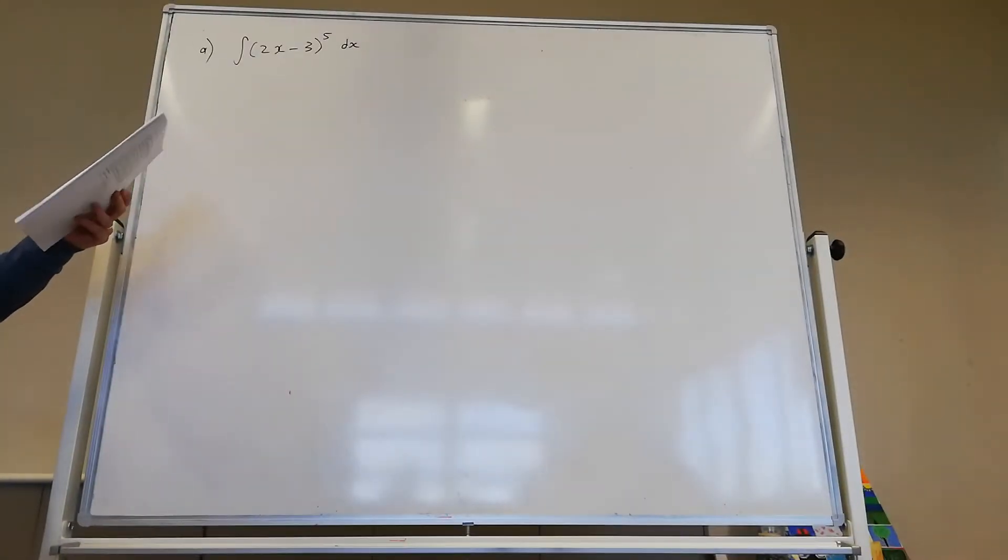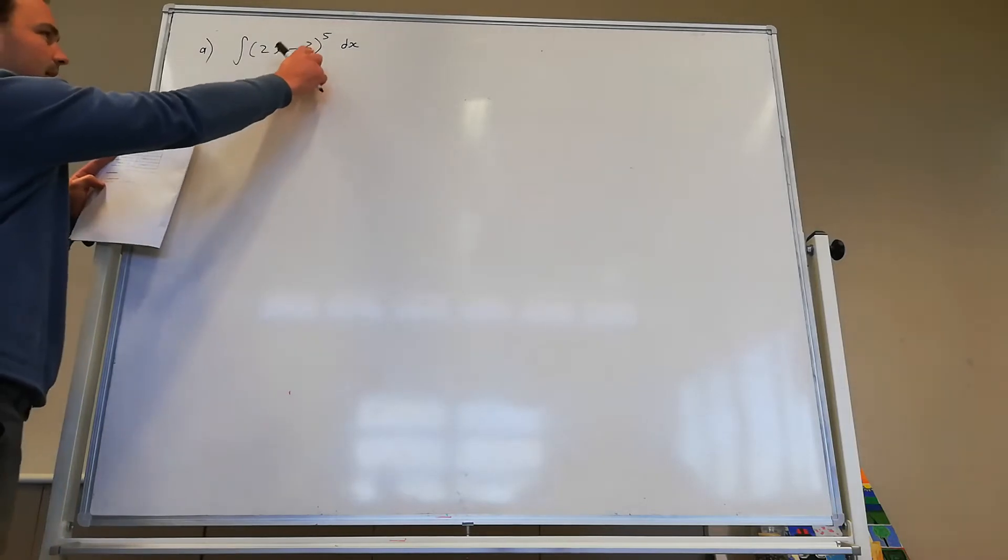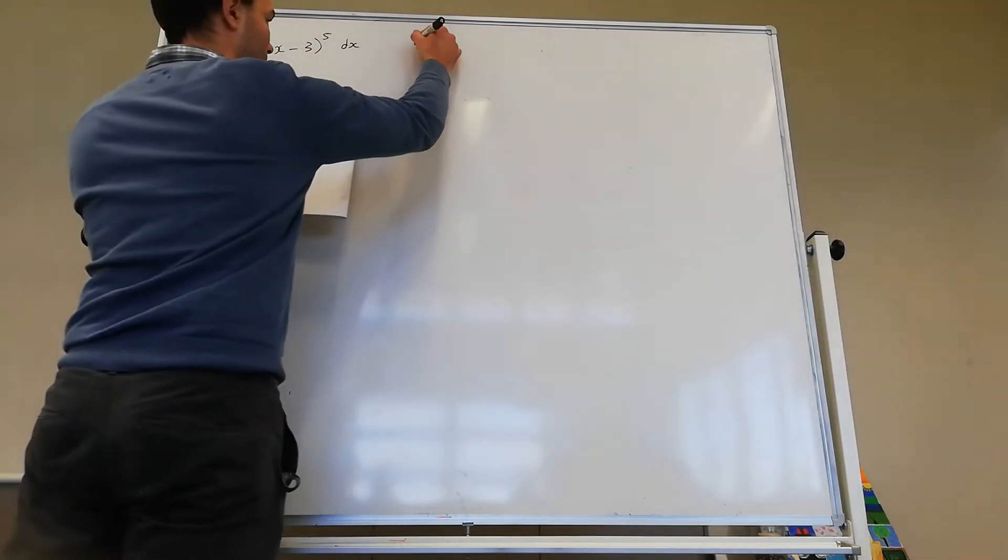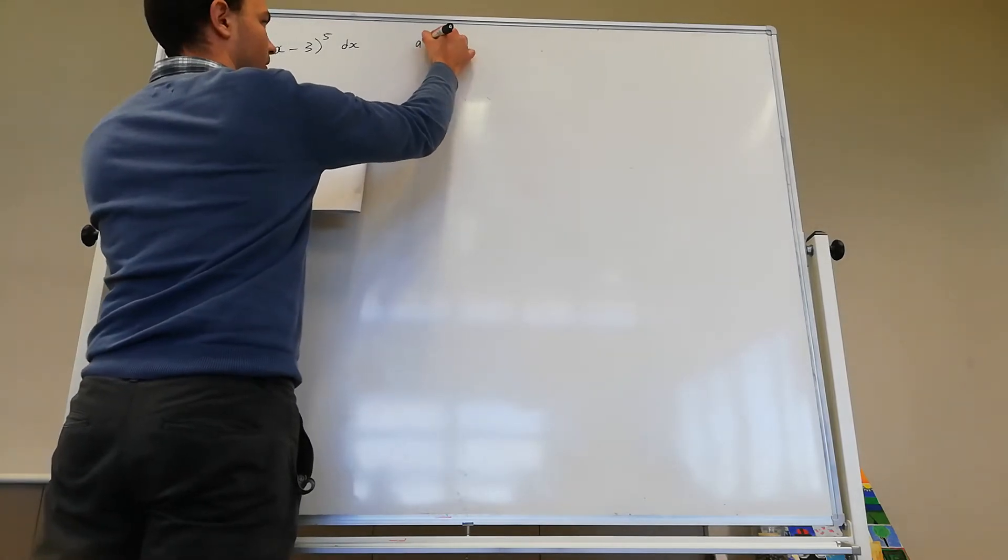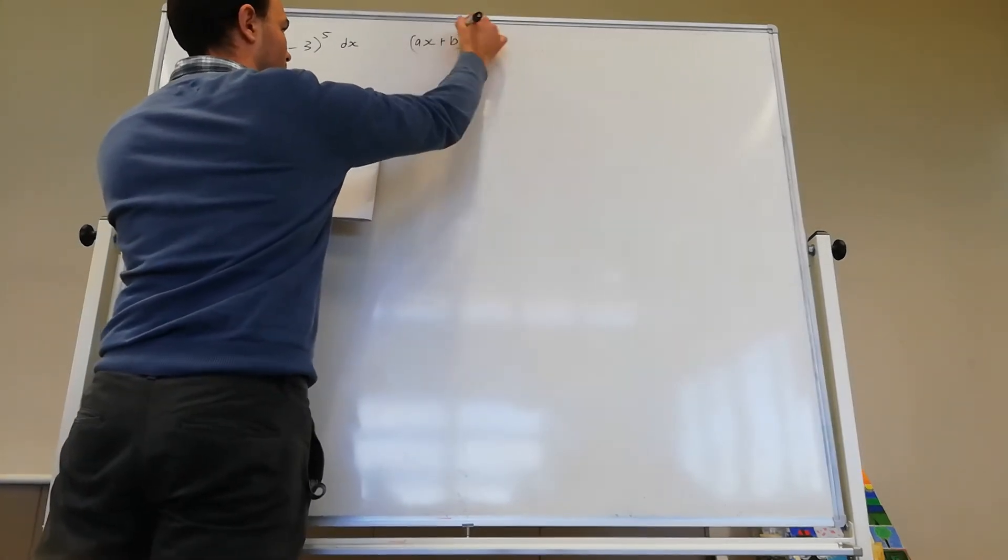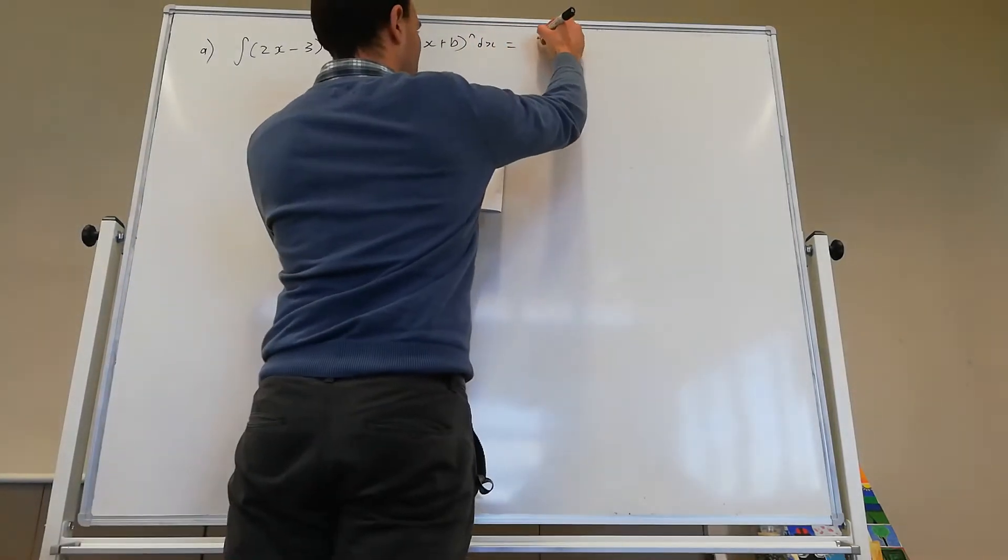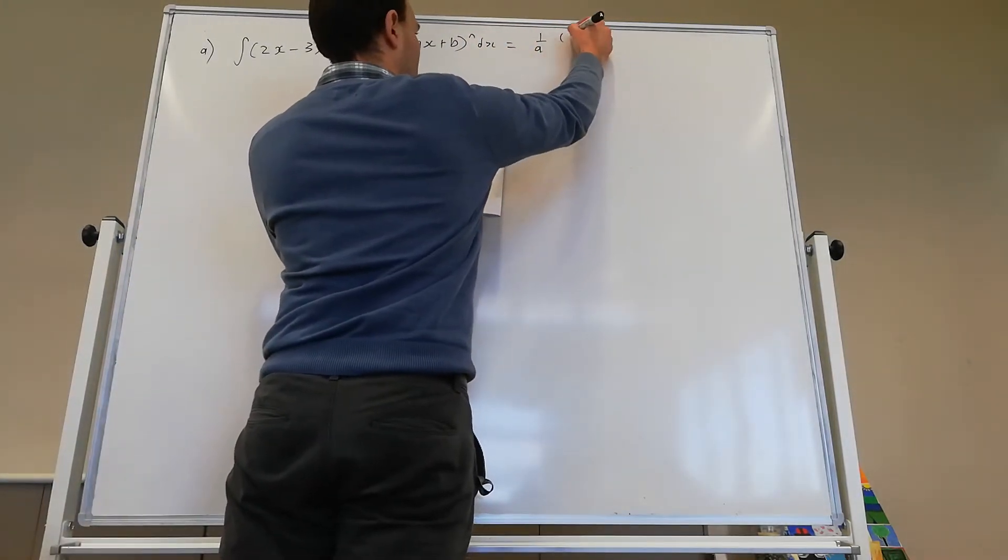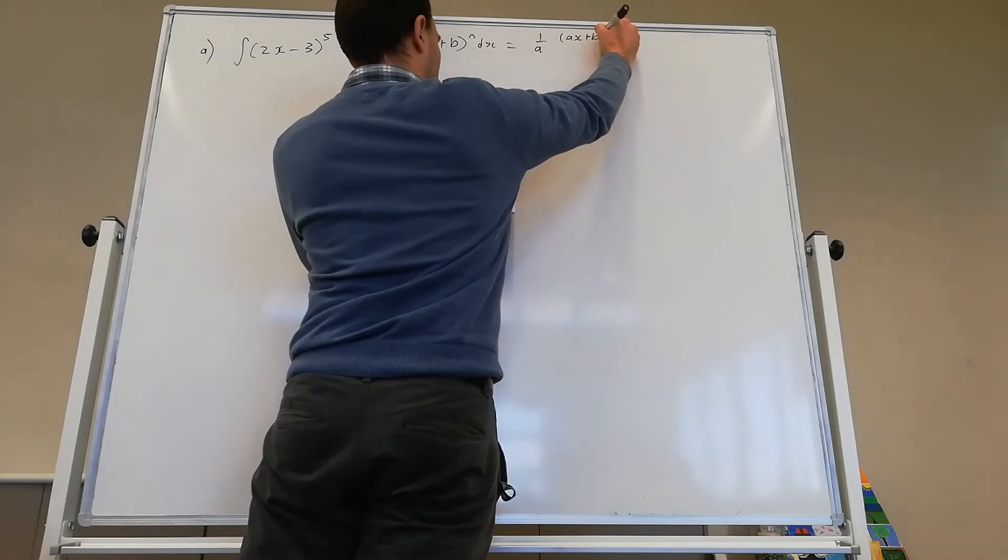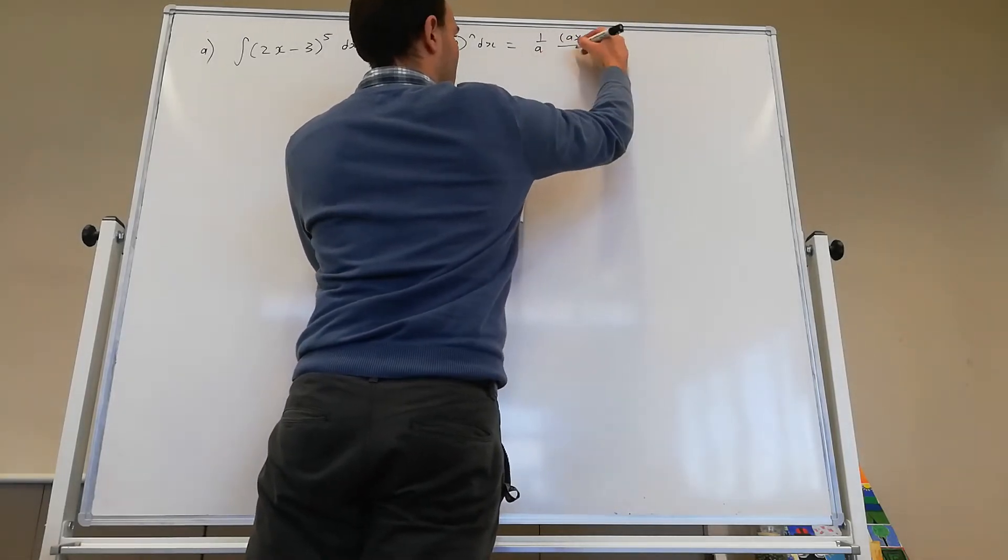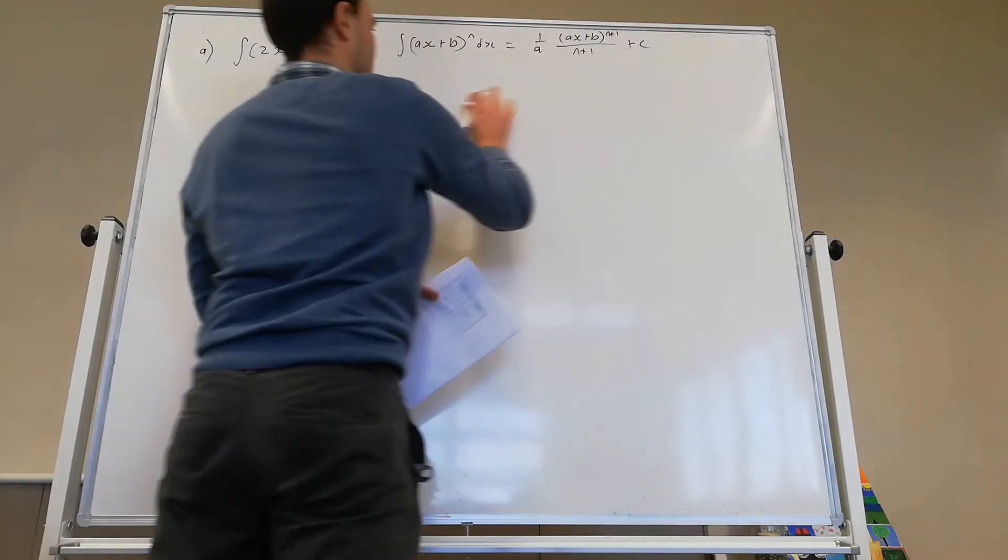So what we're going to do here, we recognize it's the same as the second one we've got there. We've got ax plus b to the power of n. So I might write this rule as I'm doing it, just so you can see the relation. Okay, so the integral of ax plus b to the power of n is 1 on a, n plus 1, divided by n plus 1 and plus c.